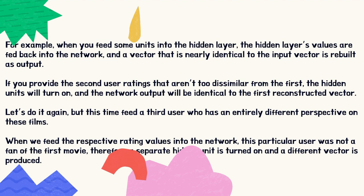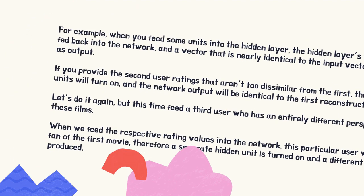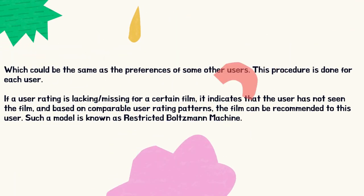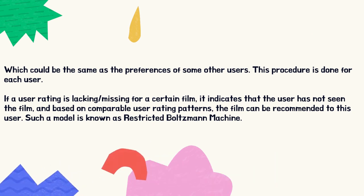If you provide a second user's ratings that aren't too dissimilar from the first, the hidden units will turn on and the network output will be identical to the first reconstructed vector. But if we feed a third user who has an entirely different perspective on these films, a separate hidden unit is turned on and a different vector is produced, which could match the preferences of some other users.